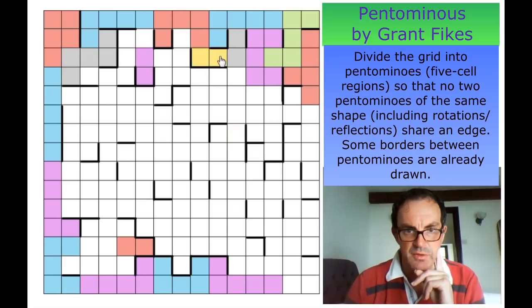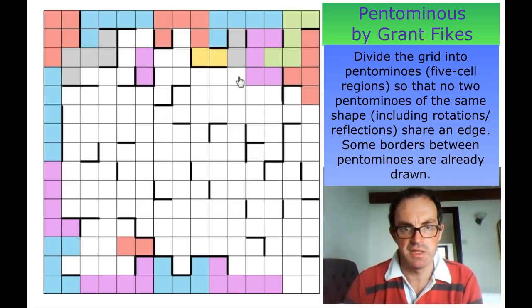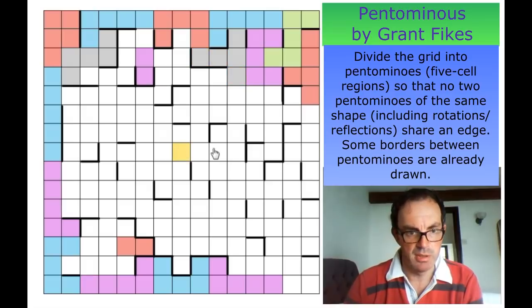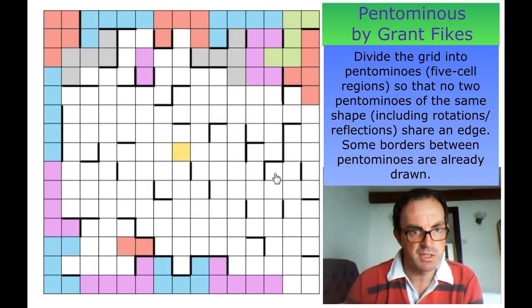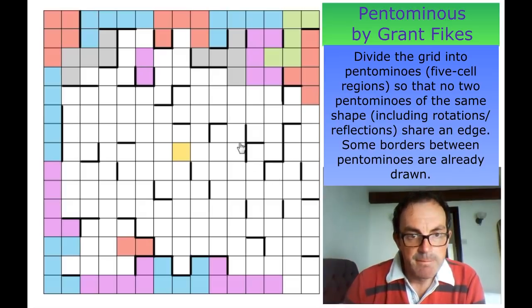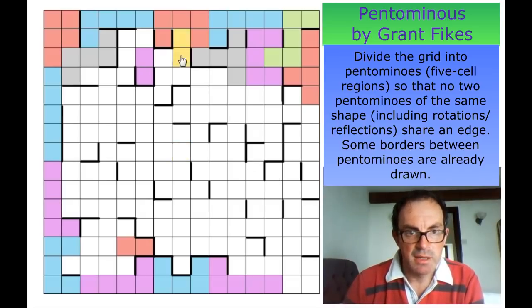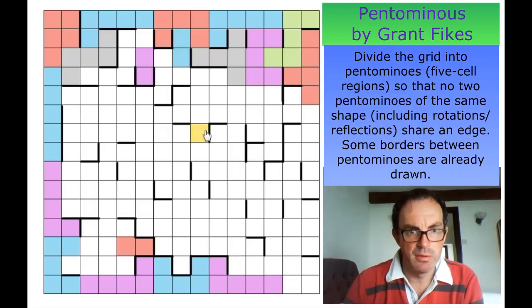These two squares are isolated, so this gray one has to be a T pentomino. I think that's the first appearance we've had of a T. This is now part of a different pentomino.